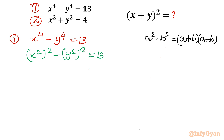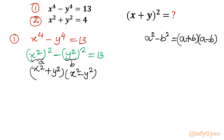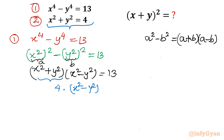Using that identity with a = x² and b = y², I write (x² plus y²)(x² minus y²) equals 13. From equation 2, x² plus y² equals 4, so substituting gives 4 times (x² minus y²) equals 13. Dividing both sides by 4, we get x² minus y² equals 13 over 4.